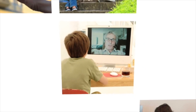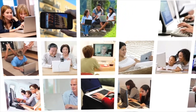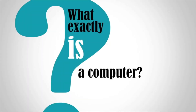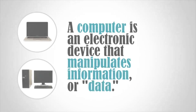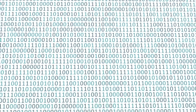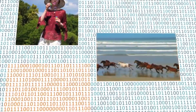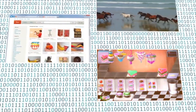Today, computers are all around us. From desktop computers to smartphones, they are changing the way we live our lives. But what exactly is a computer? A computer is an electronic device that manipulates information or data. The computer sees data as ones and zeros, but it knows how to combine them into more complex things, such as a photograph, a movie, a website, a game, and much more.